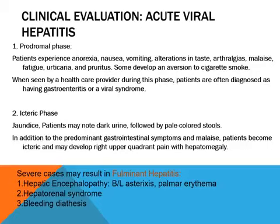Severe cases may result in fulminant hepatitis. When the patient develops an altered level of consciousness and goes into hepatic encephalopathy, sometimes with renal manifestations and bleeding diathesis, this is something very serious. Patients who develop fulminant hepatitis have a variable mortality depending upon management.